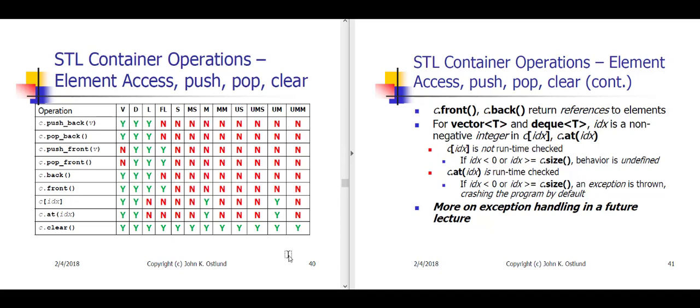Here on slide 40, we have a table of which containers allow push and pop back, push and pop front, which allow subscripting with square brackets, which allow you to clear the contents of the container using the dot clear member, and also which ones allow you to examine the front or back element using dot back and dot front. Most of these operations are restricted to the sequence containers, and whether they permit push or pop back and push or pop front has to do with what is efficient for these sequence containers. By efficient, what we mean is that it's order one — a constant time operation.